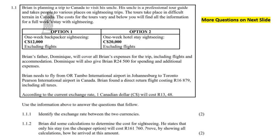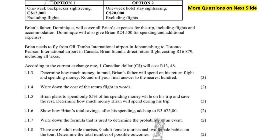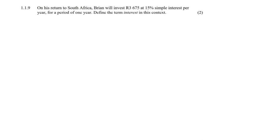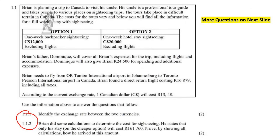We've got nine questions total — two over here, then it goes all the way to number eight, and on the last page we have number nine. Brian is planning a trip to Canada to visit his uncle, who is a professional tour guide that takes people to various places on trips. The tours take place in difficult terrain and the costs vary. Below you'll find all the information for a full week stay with sightseeing.